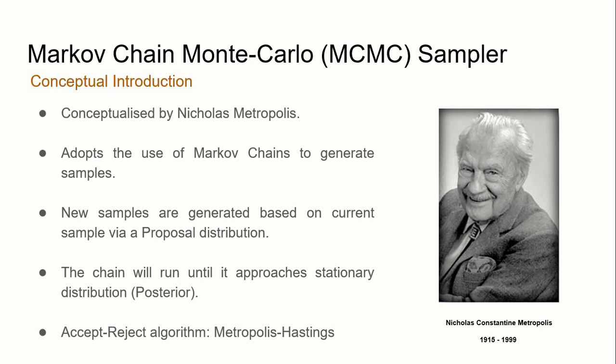For a start, let us go through a brief introduction of MCMC. The idea of MCMC was conceptualized by Nicholas Metropolis, who proposed the use of Markov chains to generate samples. In essence, new samples are generated based on the current sample through the use of a distribution known as the proposal distribution. The chain will run until it approaches the stationary distribution, which corresponds to the posterior itself. The simplest variant of the MCMC sampler is the accept-reject algorithm — the Metropolis-Hastings algorithm.